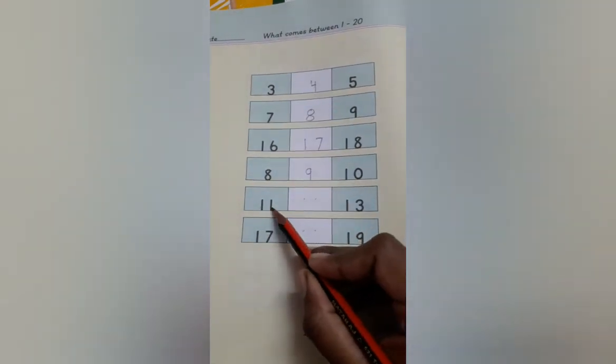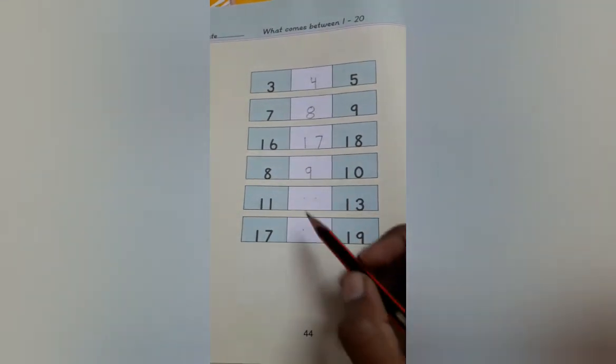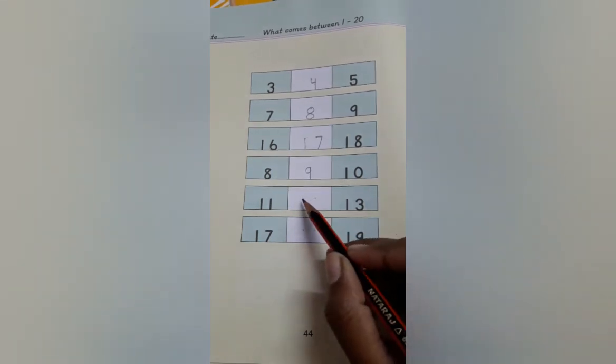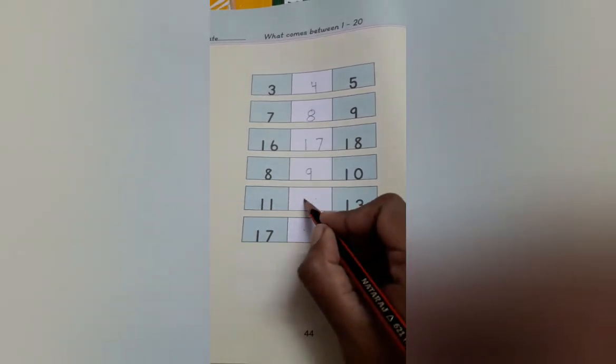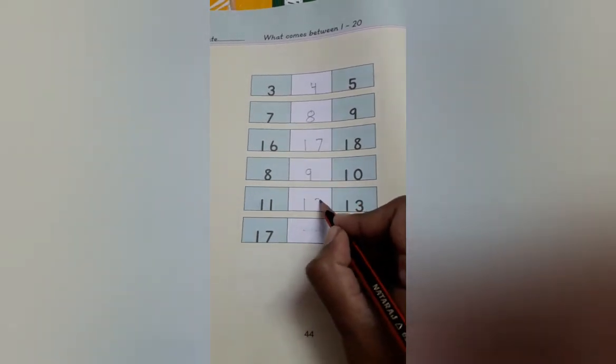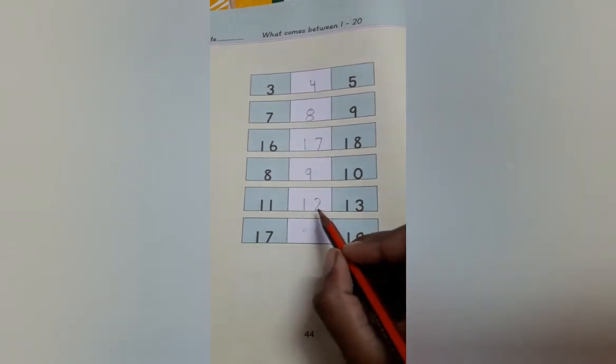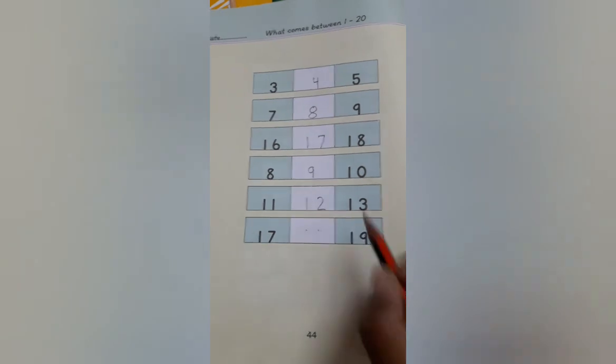11. Yes. Now what will come here? 12. So 12 comes between. Yes. Right here. 12. 11, 12, then 13. Yes.